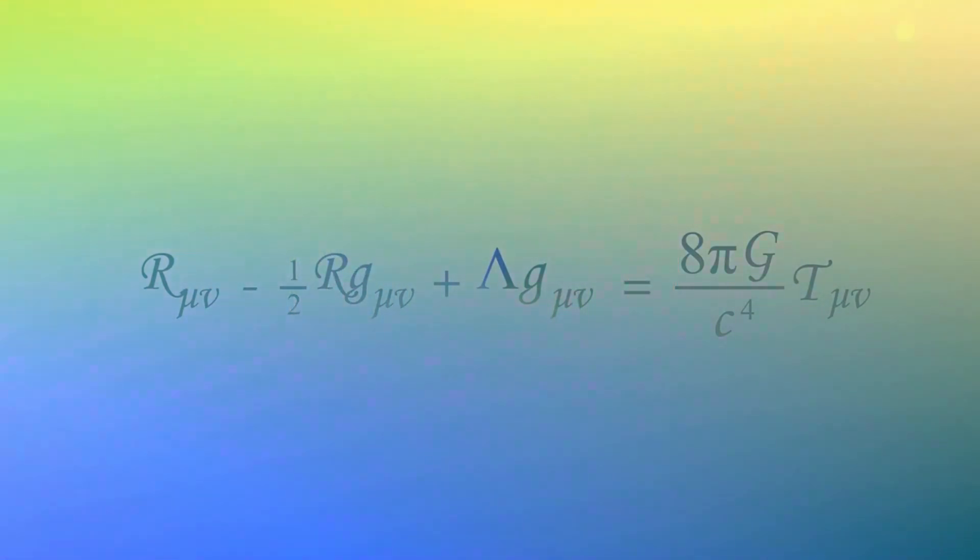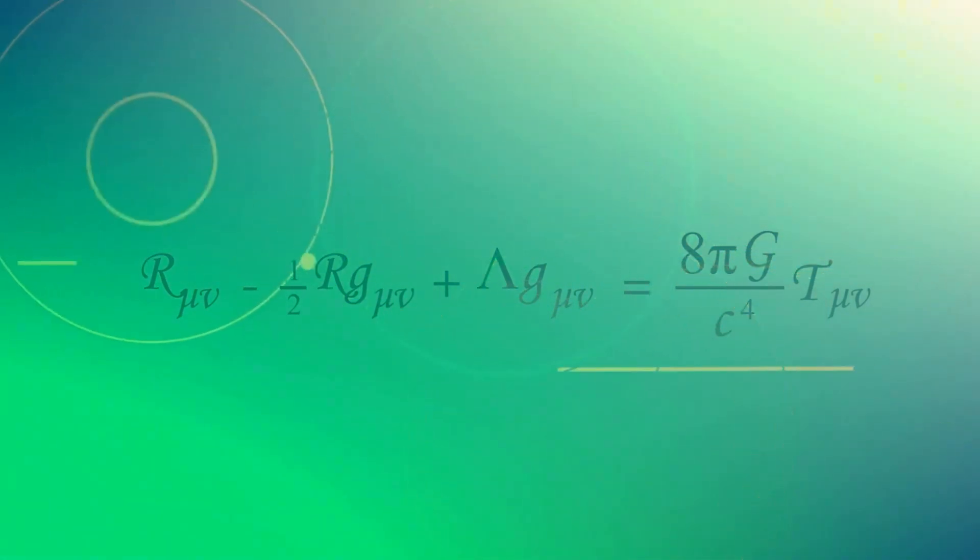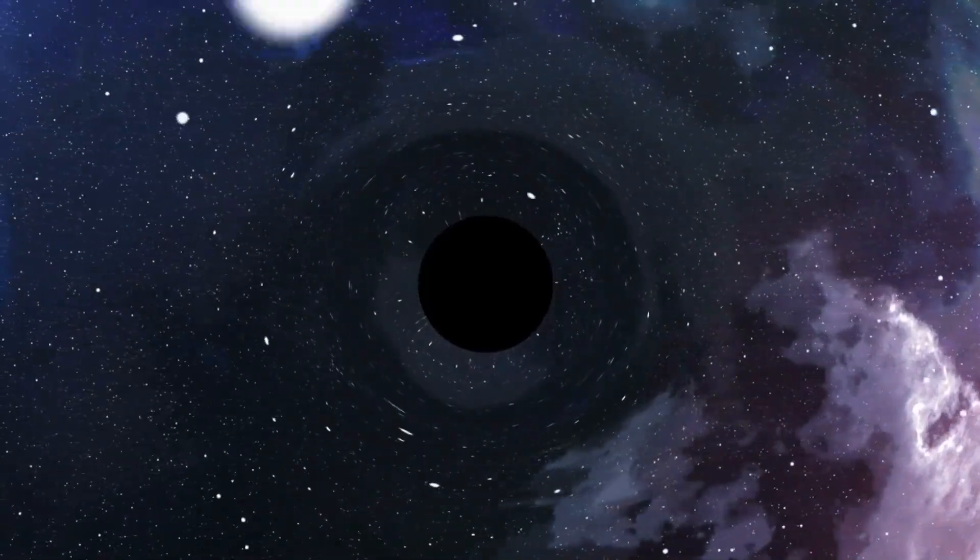He described a white hole, a theoretical time reversal of a black hole. At the event horizon is a region that emits light and particles rather than captures them. Entrances to black and white holes can be connected by a space-time conduit.